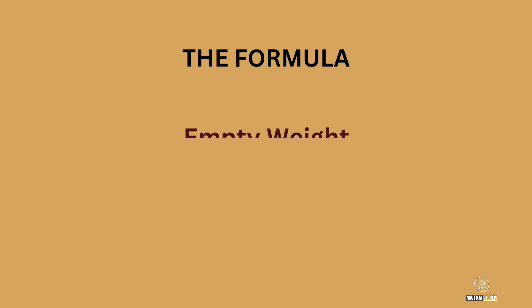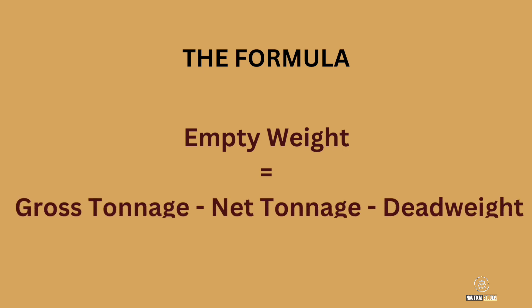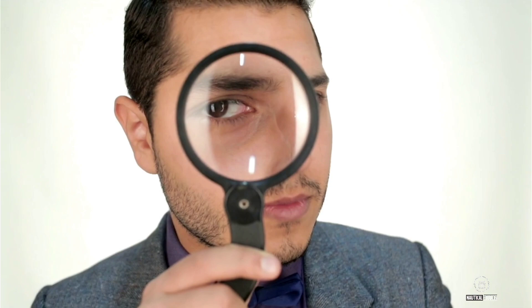The formula we'll be using is quite simple: empty weight equals gross tonnage minus net tonnage minus deadweight. By subtracting the net tonnage and the deadweight from the gross tonnage, we can obtain an estimate of the empty weight of the ship. Let's take a closer look at each of these terms.